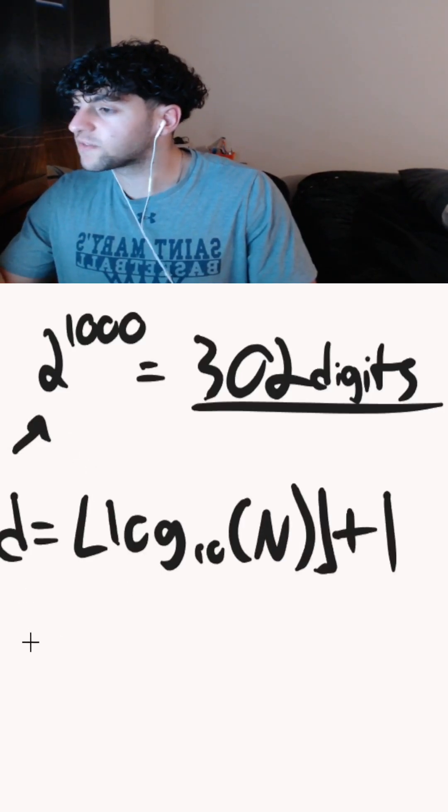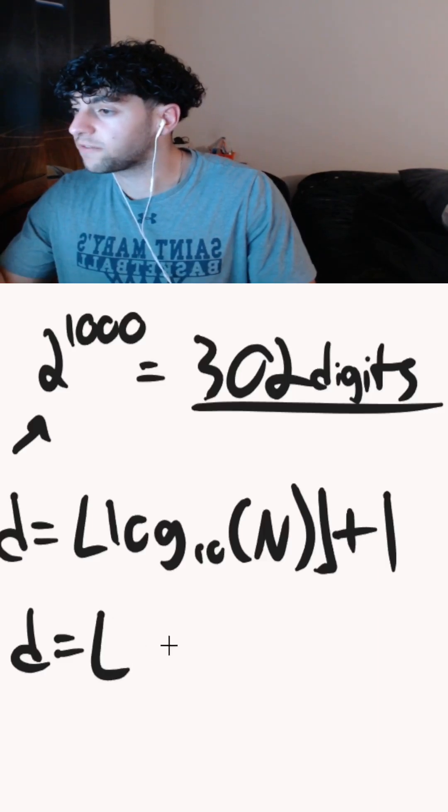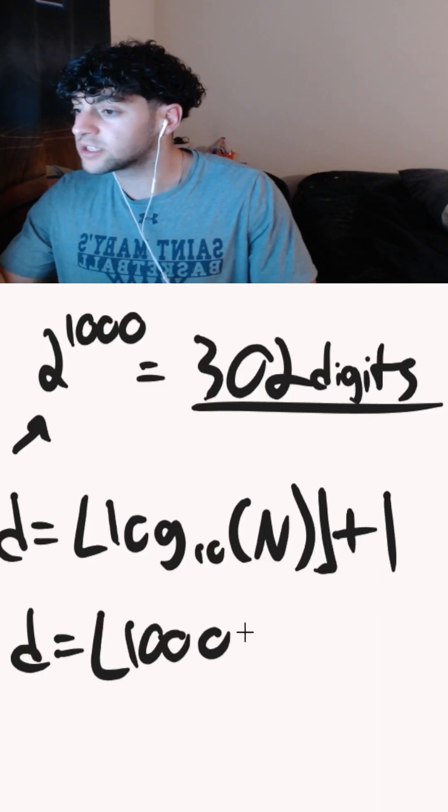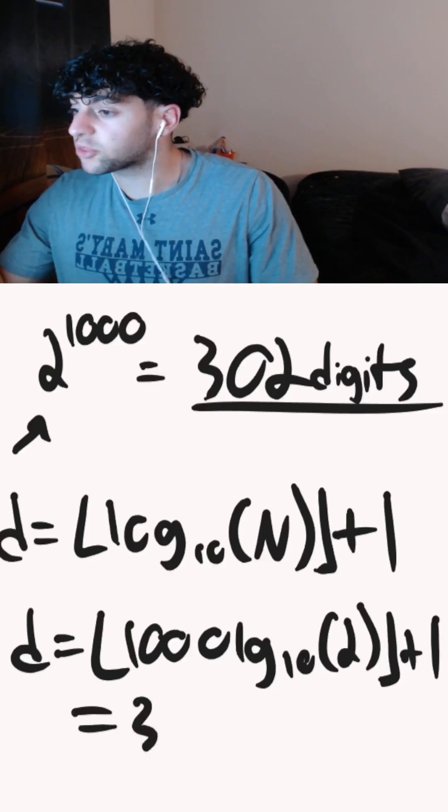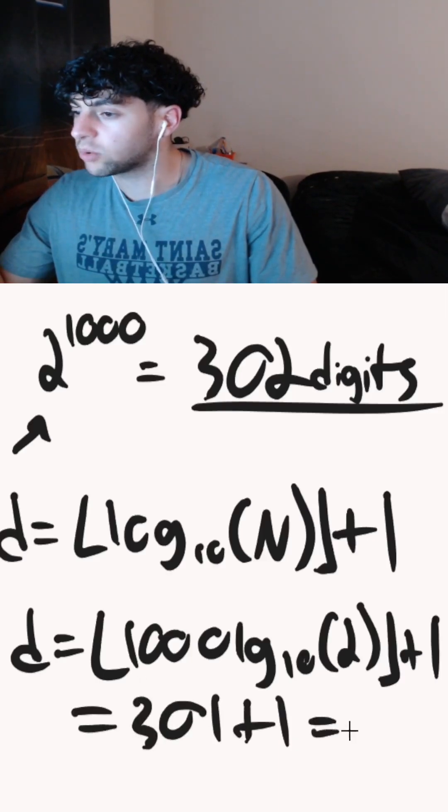If we plug 2^1000 into this formula, we get d = floor(1000 × log₁₀(2)) + 1. This simplifies to 301 + 1, which equals 302.